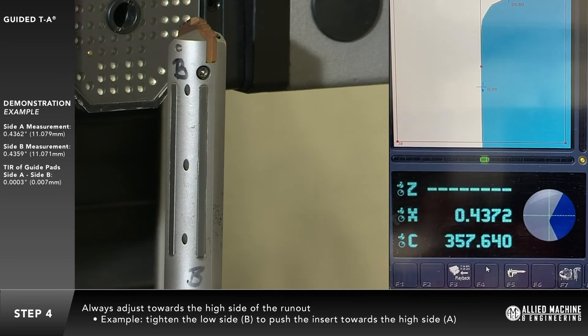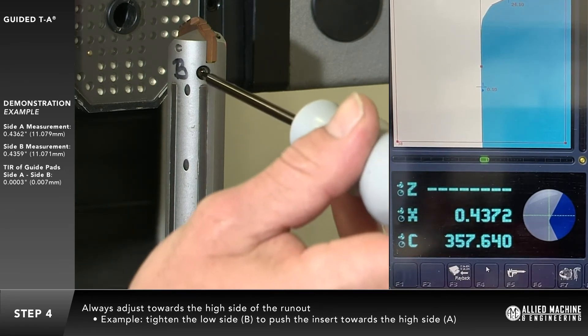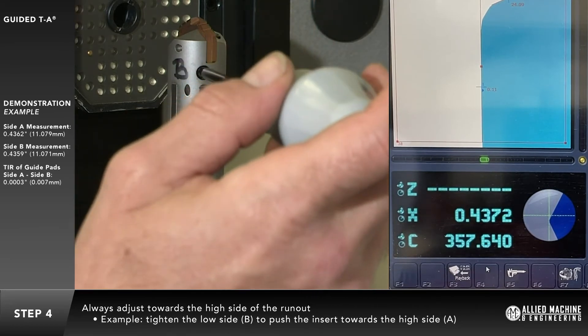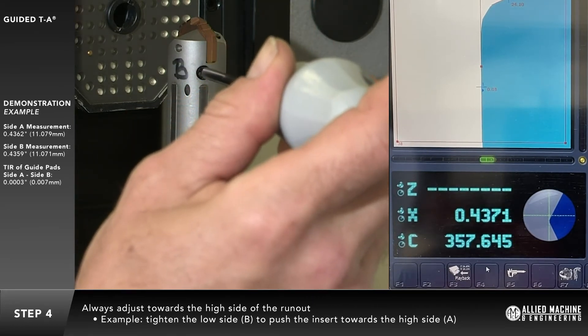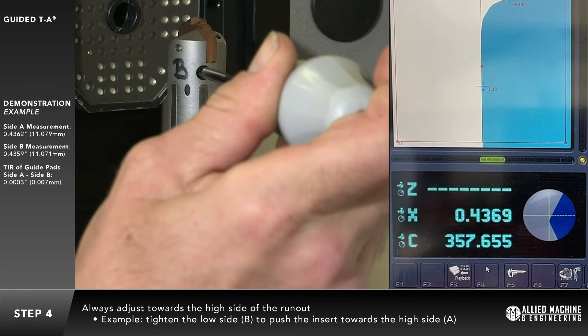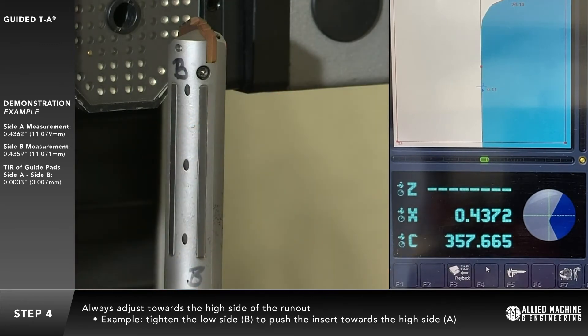Always adjust towards the high side of the run-out. In this example, we need to tighten the set screw on the low side, side B, in order to push the insert towards the high side, side A.